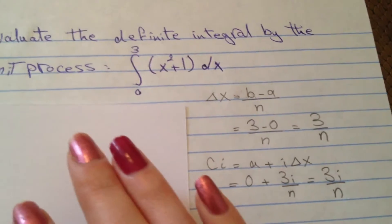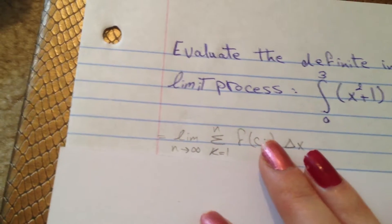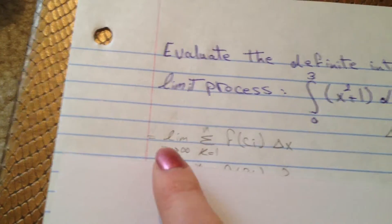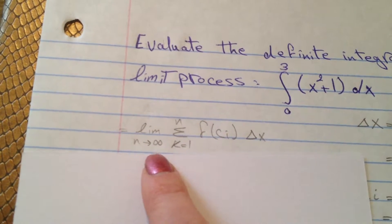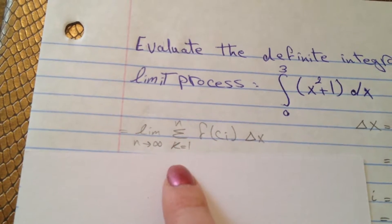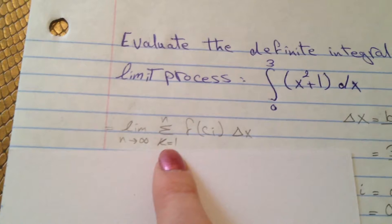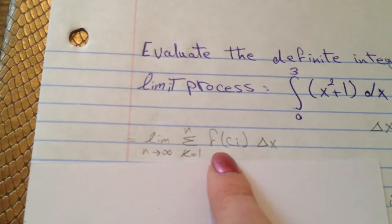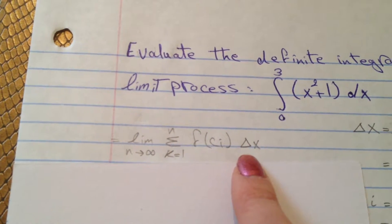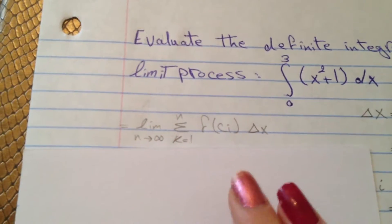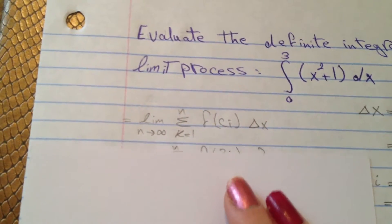Now we have to find the limit. So first we're going to write down: limit as n goes to infinity of the sum from k equals 1 to n of f(cᵢ) times delta x.